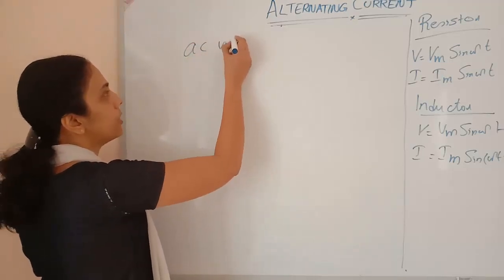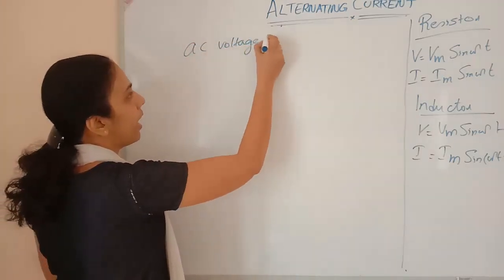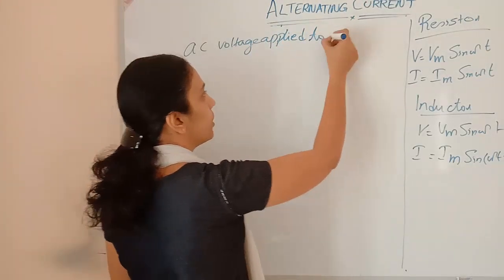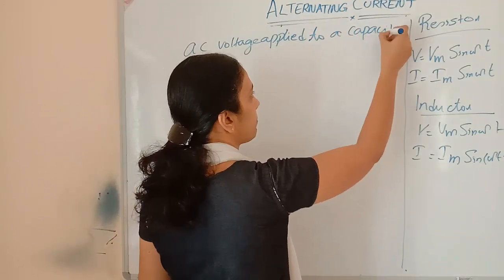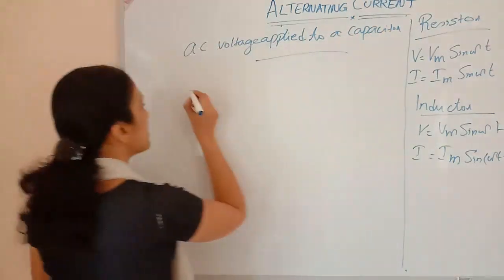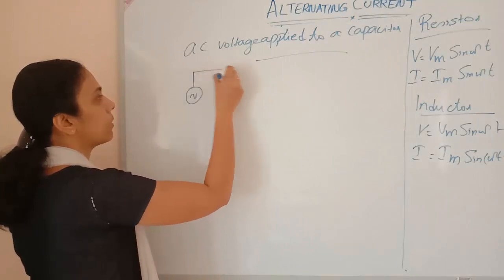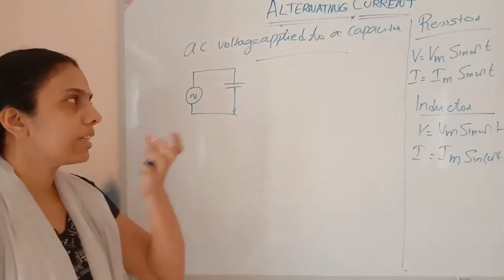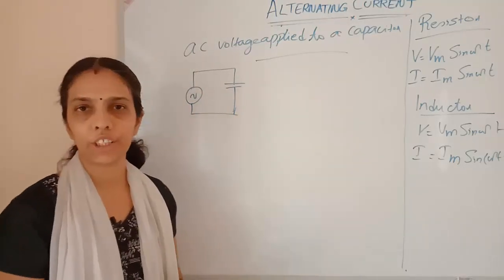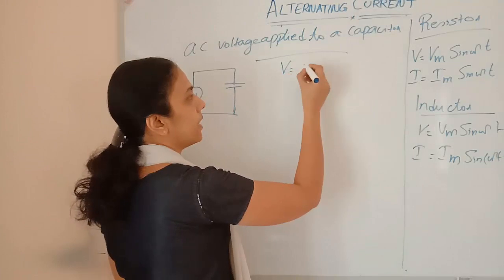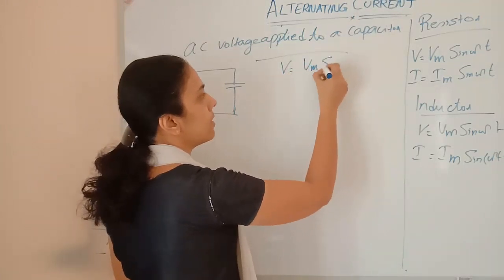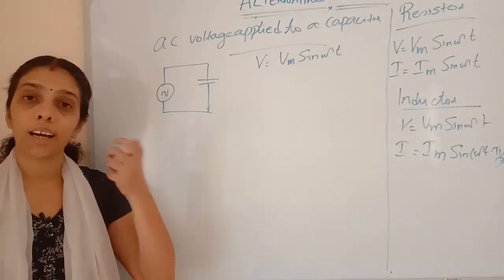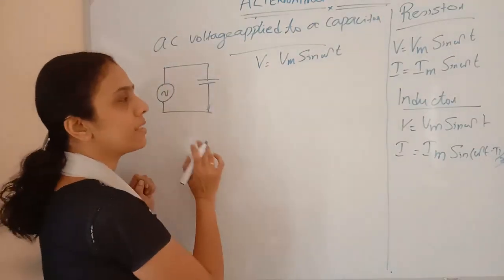AC voltage applied to a capacitor — or a condenser. Here the circuit has an AC source connected with a capacitor. We want to find out how the current and voltage will be changing. The voltage applied by the AC source is V equals Vm sin(ωt). Now we are going to find out what current will be developed in the circuit.